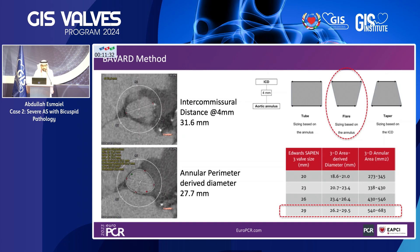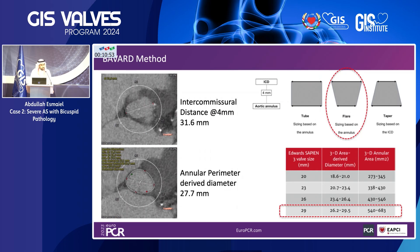With the Bavard method, you start by tracing the annulus to get the annular perimeter-derived diameter. You then go 4 mm above the annulus and measure the intercommissural distance (ICD). If the annular perimeter-derived diameter equals the ICD, it's tube-shaped and you size based on the annulus. If the annular diameter is smaller than the ICD, you also size based on the annulus. If the ICD is smaller than the annulus — taper-shaped — you size based on the ICD. From the Bavard registry, around 88–90% of cases were sized based on the annulus.